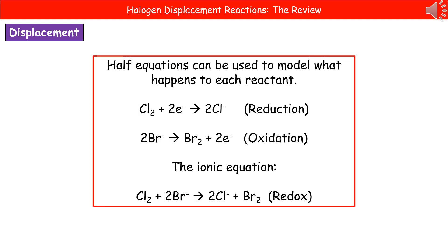The last thing we need to be able to do is to write half equations to model what happens to each reactant. So I've given you the two half equations that we could see for one of these reactions. So if we start off with our chlorine, so Cl2, then that gains the two electrons, 2e-, to make our two chloride ions, 2Cl-.